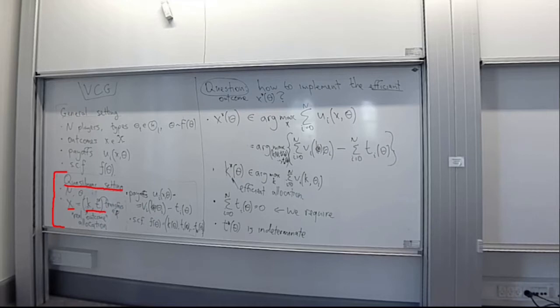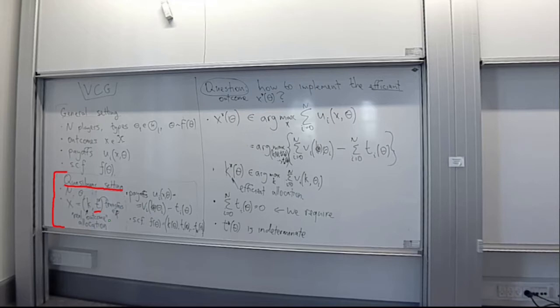k here is a real outcome or an allocation — this is what we took to be the outcome up until this point. It is the decision made by the mechanism: who gets the item, do we implement the public project, which decision do we take as a society. T however is the new element — t prescribes the transfers to or from different players, the amount of money that these players must either pay or be paid by the mechanism.